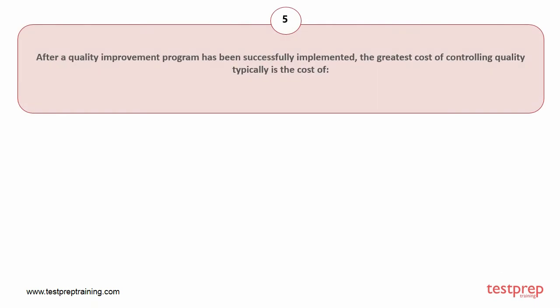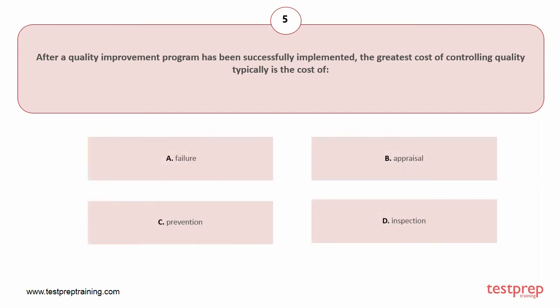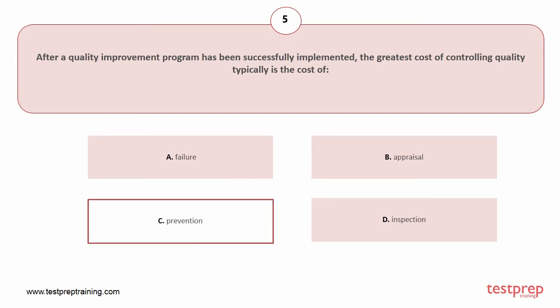Question number five: After a quality improvement program has been successfully implemented, the greatest cost of controlling quality typically is the cost of your options: A) failure, B) appraisal, C) prevention, D) inspection. The correct answer is option C.